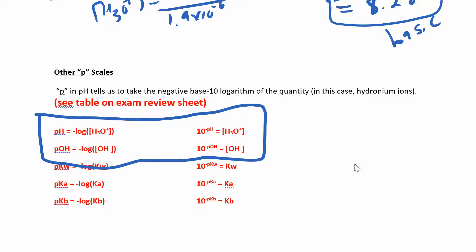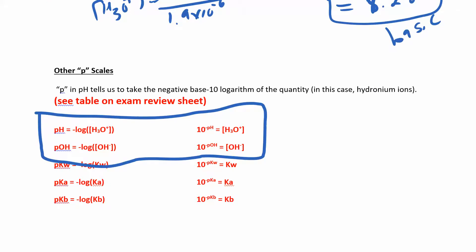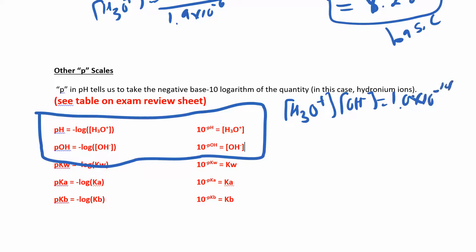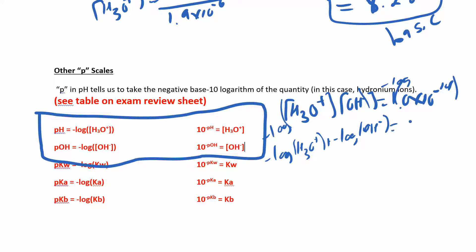I'm going to derive one of these equations quickly. We had hydronium times hydroxide equals 1 × 10⁻¹⁴. If I take the negative log of both sides and use log rules, I get negative log of hydronium plus negative log of hydroxide equals negative log of 1 × 10⁻¹⁴, which just gives me 14. This right here is pH and this right here is pOH — so pH + pOH = 14. That's where we got that equation from.